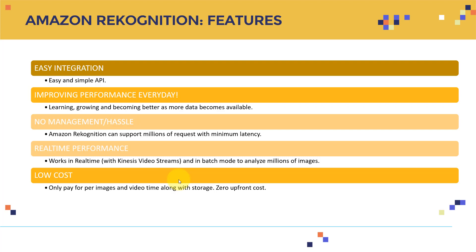Once you have Kinesis Video Streams set up — which we covered in previous lectures — you can ingest video from a camera, for example one set up at your home to check on your pet, and then perform batch mode to analyze millions of images. You can do object detection and whatever you want based on that. This is a prime example of a system built by integrating Amazon Kinesis Video Streams along with SageMaker and Amazon Rekognition to build an entire object detection system.